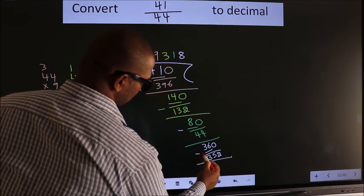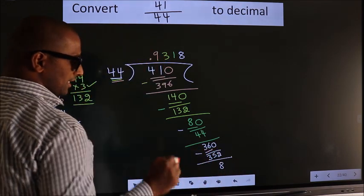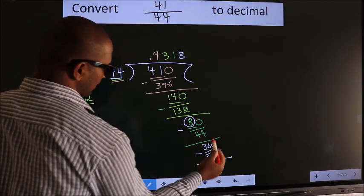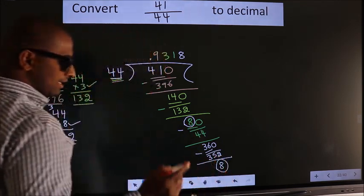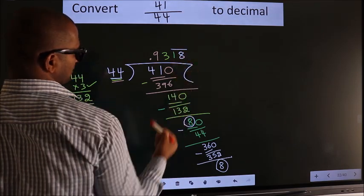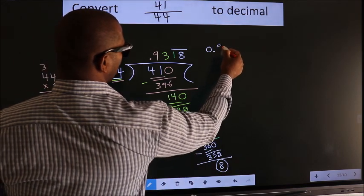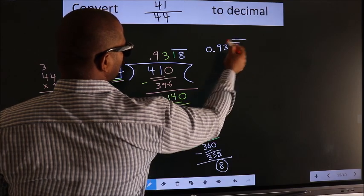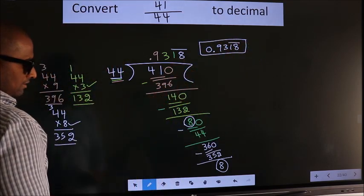Now we subtract and get 8. Observe: we got 8 here, and we got 8 again. That means we get a bar on these two numbers. Therefore our answer is 0.9318 with a bar on the last two digits. This is our answer.